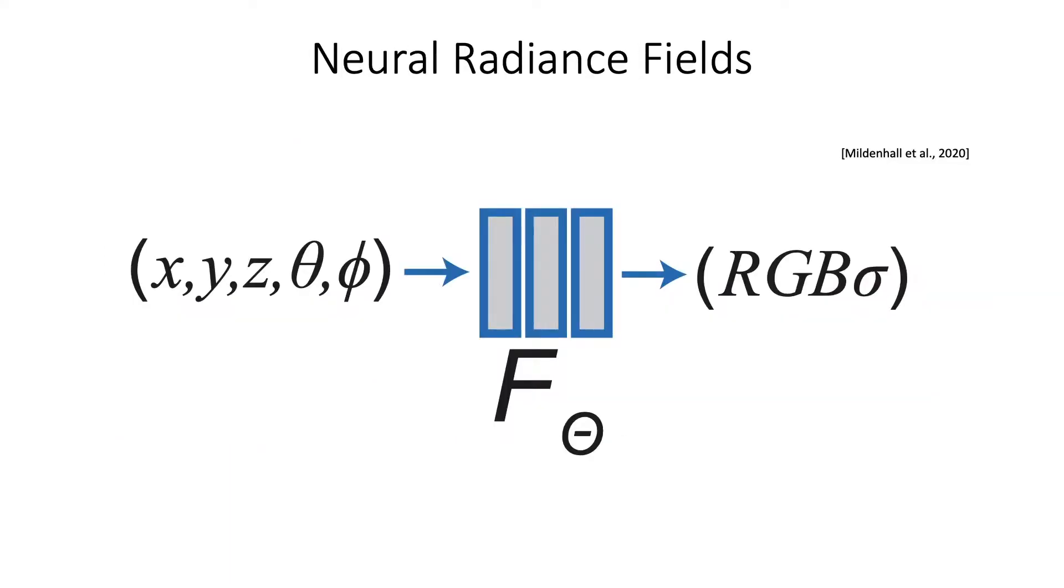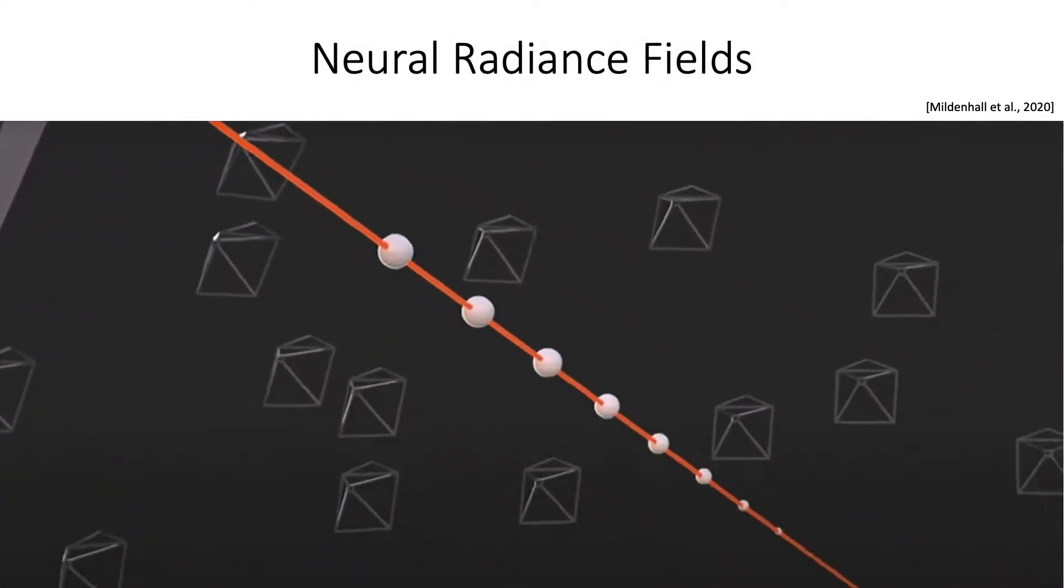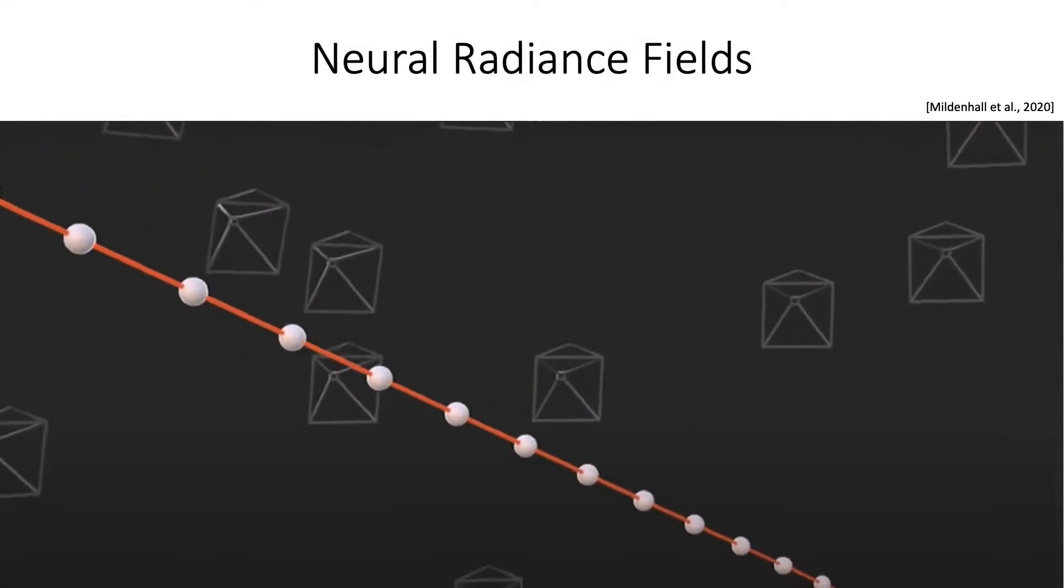Neural radiance fields are a representation that allow for photorealistic view synthesis. However, they are slow to render because they require many evaluations of a neural network per pixel.